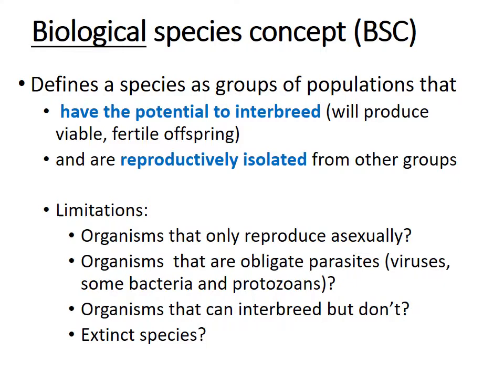One concept we can use is the biological species concept, which defines a species as a group of populations that have the potential to interbreed and can produce viable — meaning living and fertile — offspring whose offspring can also have offspring, and they must be reproductively isolated from other groups. Limitations include organisms that reproduce only asexually like bacteria, organisms that require others to reproduce, organisms that could interbreed in captivity but don't in the wild, and extinct species. We'll use the biological species concept in this class, but there are definite limitations.